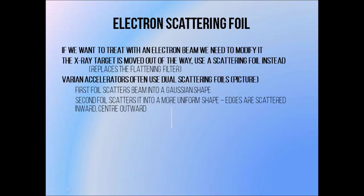If we want to use a linac to produce a clinical electron beam, we move the x-ray target out of the way. The electrons at this point are still in the form of a pencil beam, which is not very clinically useful — it's much thinner than most of the targets we want to treat. So we convert it into a more broad and clinically useful shape using scattering foils further down in the treatment head. Varian accelerators use something called a dual scattering foil, which consists of two thin pieces of metal that spread out the beam by scattering. The beam hits one layer and is spread out a bit, then hits a second layer which further adjusts its shape.